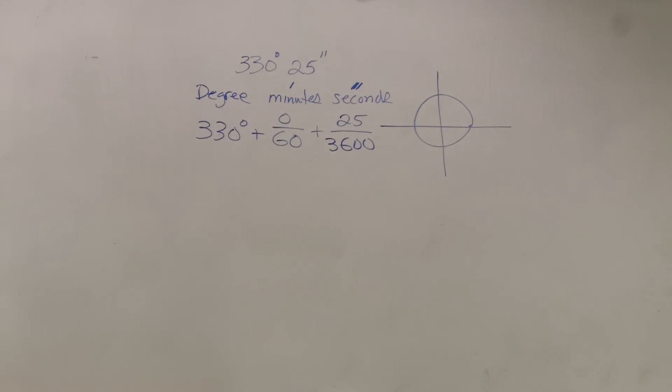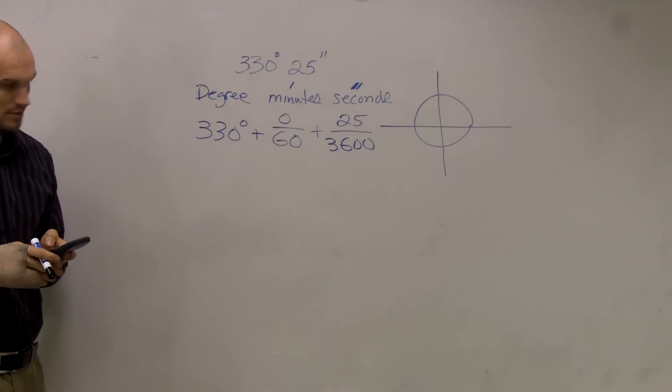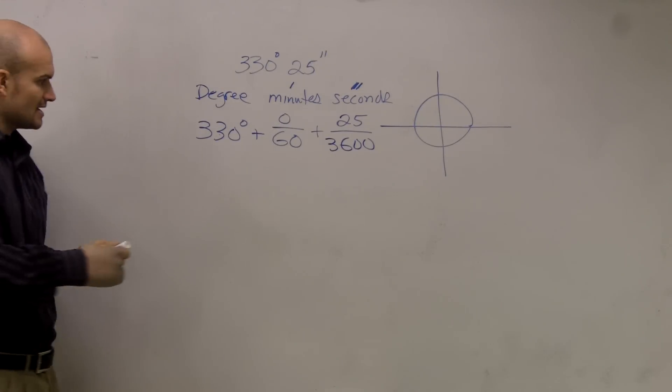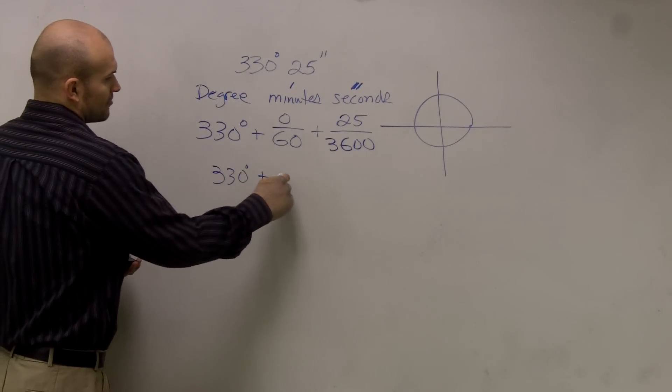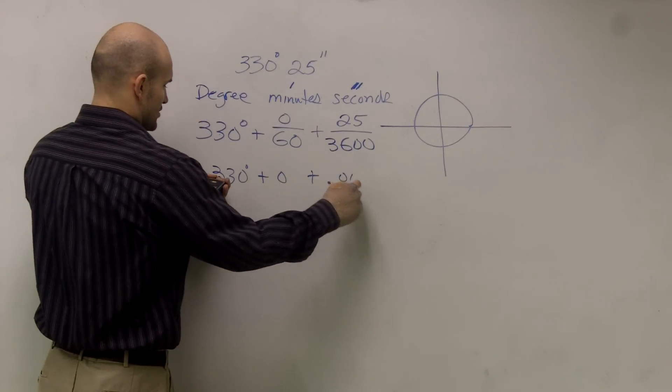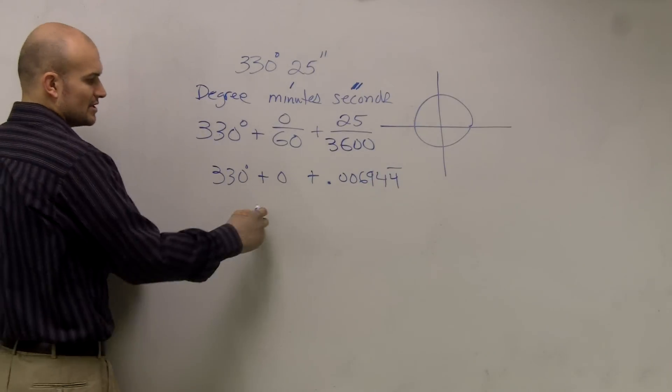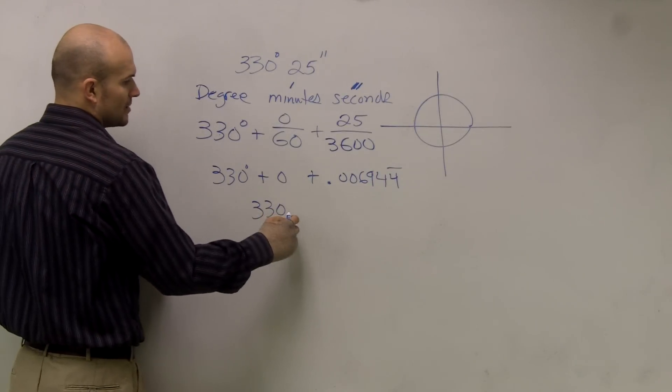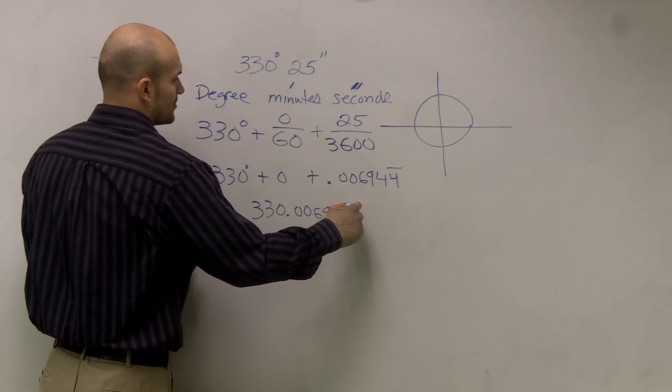So all you're going to do is you're going to take your calculator. And obviously, 0 over 60 is 0, but you do 25 divided by 3,600 is 0.0069. So my answer would be 330 degrees plus 0, right? But if that was a decimal, you'd add it in there. Plus 0.006944, and that's repeating. So then you just add 330.006944 degrees.